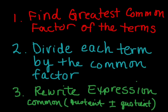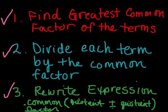So to review: I need to find the greatest common factor of the terms in the expression, divide each term by the common factor, and then rewrite the expression. The common factor lives on the outside, and then the quotient I get when I divide the first term by the common factor, plus or minus the quotient that I get when I divide the next term by the common factor, live inside the parentheses.